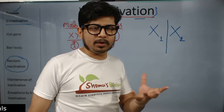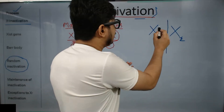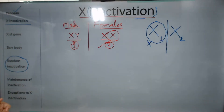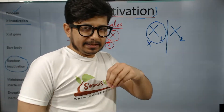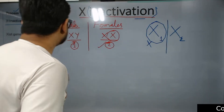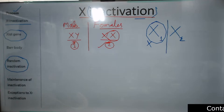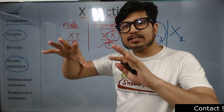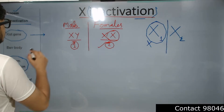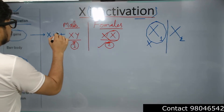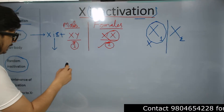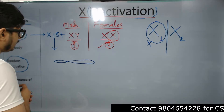We always ask: why X1 and not X2? To answer that, what we know is that there is a specific gene inside the X chromosome that regulates the process of X-inactivation. That gene's name is XIST — X-I-S-T. The XIST gene actually regulates the process of X-inactivation. It produces XIST mRNA, and once the XIST mRNA is produced, it acts on the X chromosome.